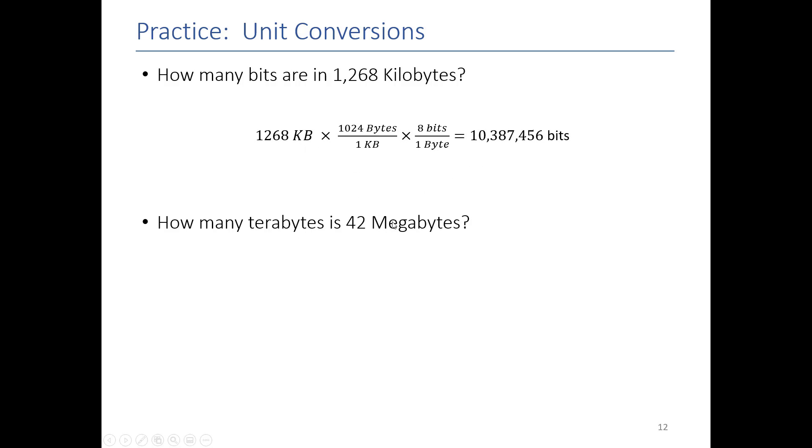Here, I'm going the opposite. I'm going from megabytes to terabytes. A terabyte is much bigger than a megabyte, so I should expect my answer to be smaller. So, if I have 42 megabytes, and I know that I'm going to go up the scale, it's gigabytes next. So, 1 gigabyte has 1024, and then from gigabyte to terabyte is 1024. And I end up with a really, really small number. And that makes sense.